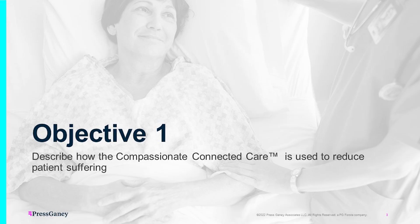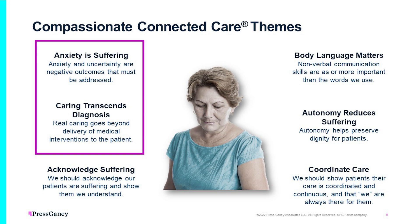The first objective we'll be talking about is describing how compassionate, connected care is used to reduce our patients' suffering. These are all the different areas and themes we're going to cover through the separate modules. The highlighted purple section covers the two we're discussing today: recognizing that anxiety is suffering, and understanding how caring transcends our patient's diagnosis. The more people that are verbal and talk during this session makes it go a lot quicker, so there will be questions where I'll ask for audience participation.